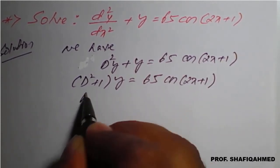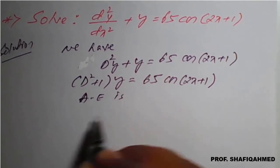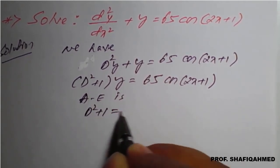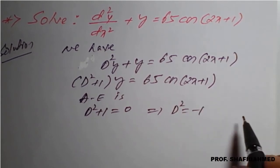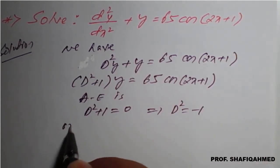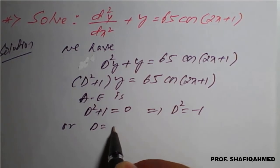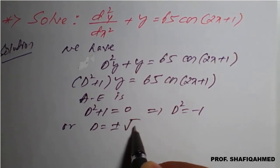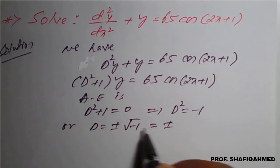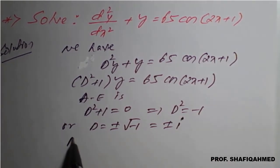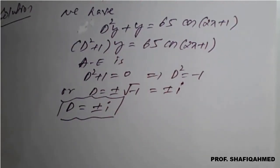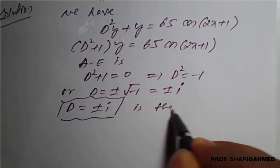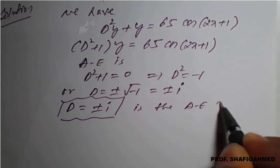From the left-hand side, the auxiliary equation is D² + 1 = 0, which implies D² = -1, so D = ±√(-1) = ±i. Therefore, D = ±i is the auxiliary equation root.